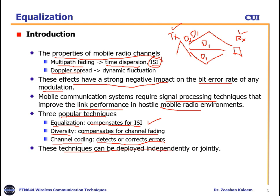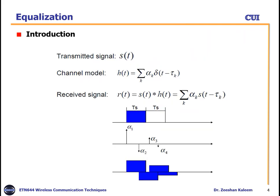These three techniques can be deployed independently or jointly in one system. This is a representation of our transmitted signal — an example showing how data is transmitted, passed through a channel, and how the received signal looks. Our transmitted signal is s(t), and the channel model h(t) represents the medium through which our data passes.